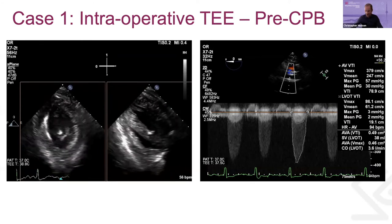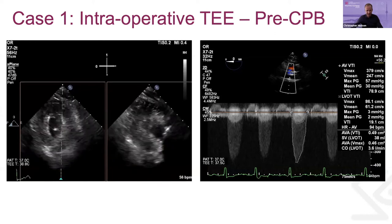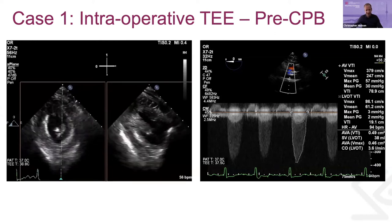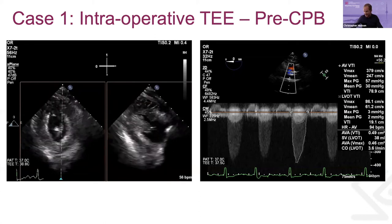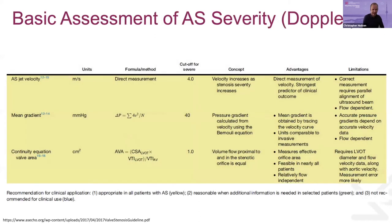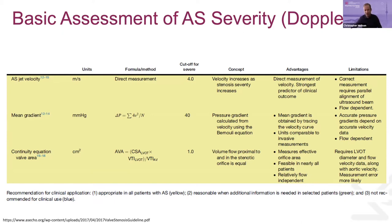For the next part of the talk, I'm going to discuss grading the severity of aortic stenosis. Morphologically it looks like AS, but how severe is it? The 2017 guidelines have a nice table breaking down how to grade AS. The table is divided into a yellow section, a green section, and a blue section. We're going to focus on the yellow section — recommendations for Doppler for all patients with AS — covering AS jet velocity, mean gradients, and the continuity equation by area.